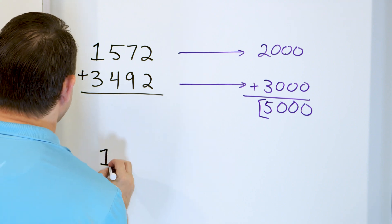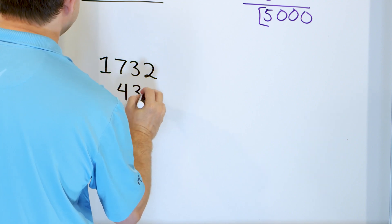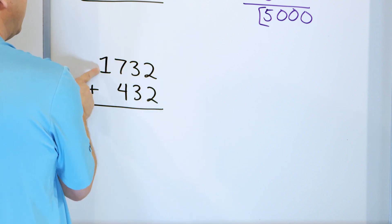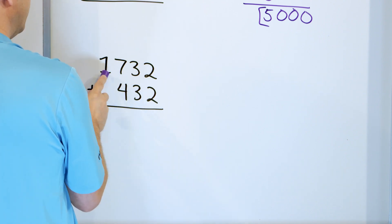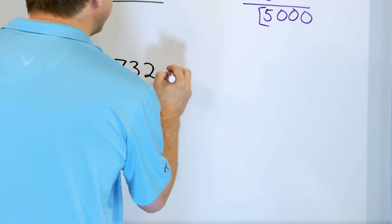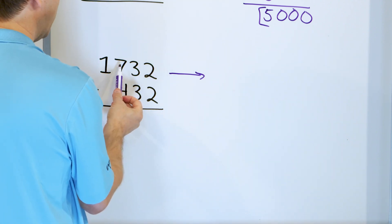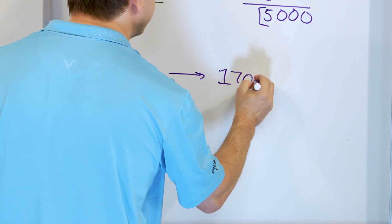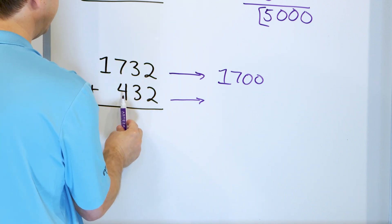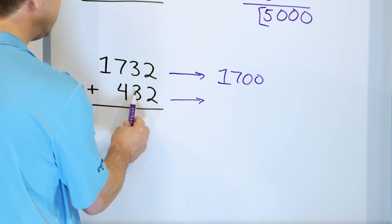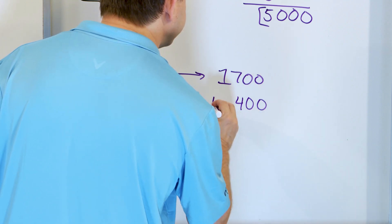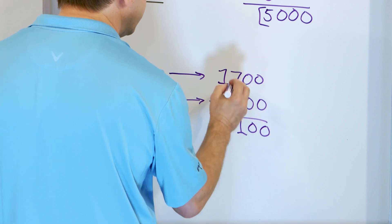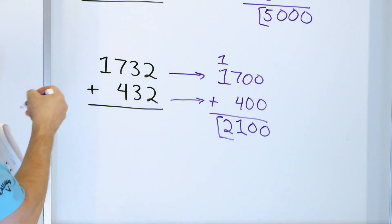Now take a look at this one — it's a little tricky: 1,732 plus 432. The first thing is to decide how many columns to round to. Since these numbers have a different amount of columns — four digits and three digits — we can only round to the hundreds place. Rounding 1,732 to the hundreds: it can go up to 800 or down to 700. Since it's three next door, less than five, we round down to 1,700. For 432, it can go up to 500 or down to 400 — next door is less than five, so it goes down to 400. Adding: zero plus zero is zero, zero plus zero is zero, seven plus four is 11, put a one and carry a one, one plus one is two. The estimated answer is 2,100.